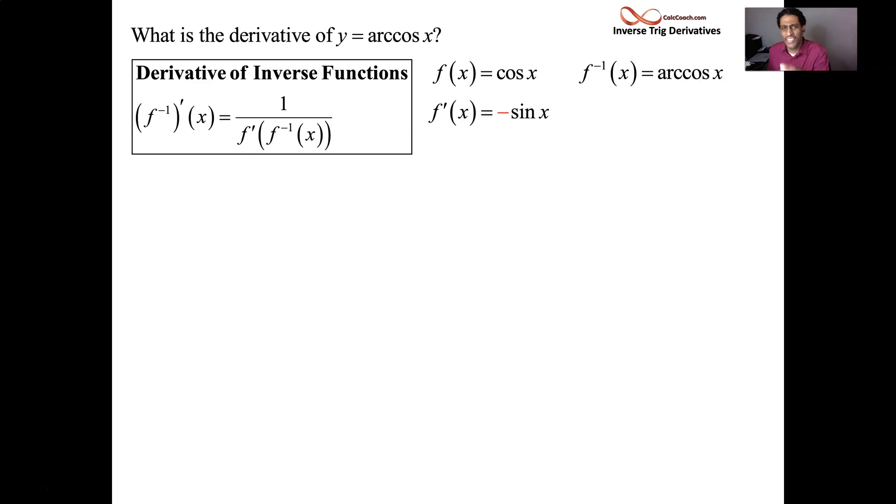So our job is to take this inverse function arc cosine x and find its derivative. So this formula says that you do 1 over the original function's derivative, but not evaluated at x. Evaluated at the inverse function. So I do 1 over negative sine, not of x. 1 over negative sine of arc cosine of x.